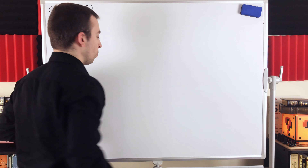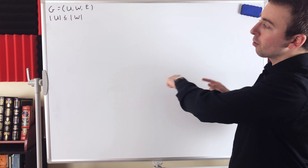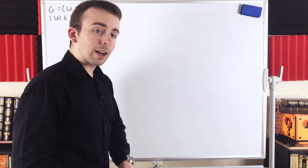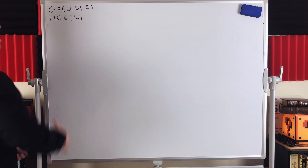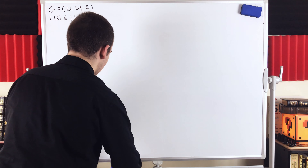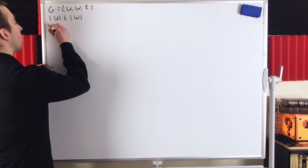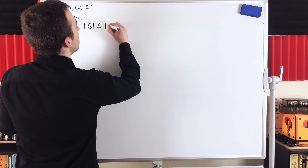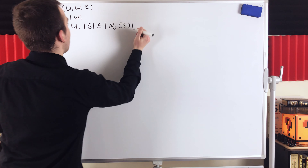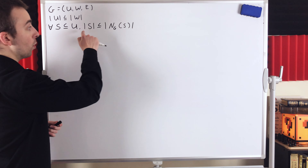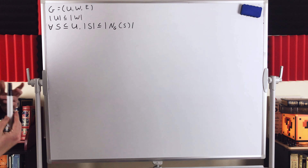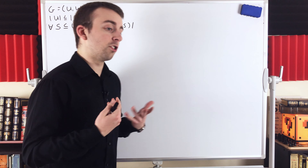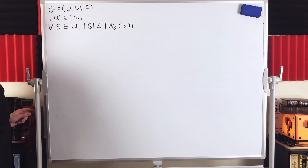Now we move to the other direction of the proof, which is where most of our focus will lie. We assume that G satisfies Hall's condition — that for every subset S of the smaller partite set U, the cardinality of S is less than or equal to the cardinality of the neighborhood of S in G. We want to show this implies G has a matching covering U, equivalently a matching of cardinality equal to |U|. We'll prove this by strong induction on the cardinality of the smaller partite set.